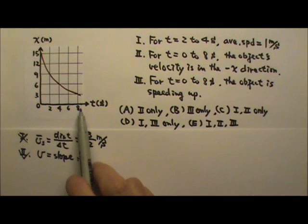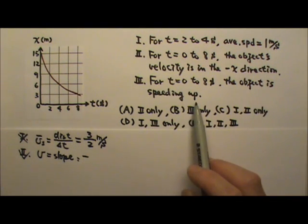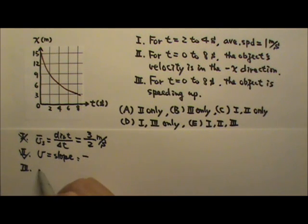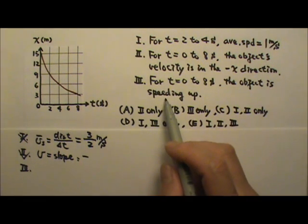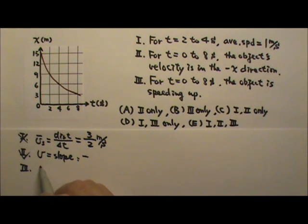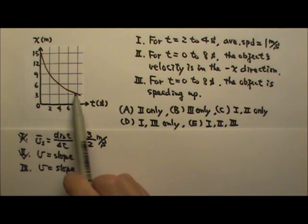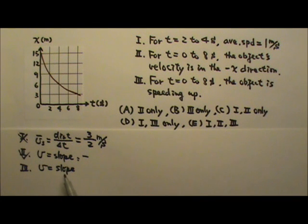For t equals 0 to 8 seconds, the object is speeding up. Now let's see. Again, the speed is the magnitude of the velocity. So the speed depends on the slope. Now speed is the magnitude of the slope. So since we only care about the magnitude of the slope, we just have to look at the graph to see how steep it is. It starts out steep and then gets less and less steep. That means the magnitude of the slope is decreasing. So the object is not speeding up. It is slowing down. So number 3 is wrong.